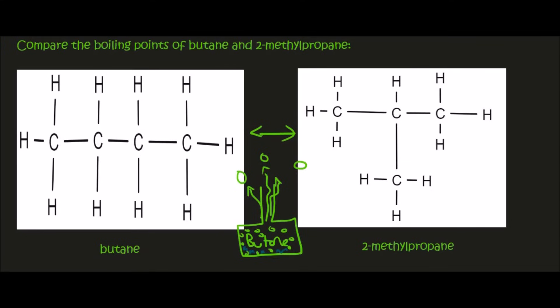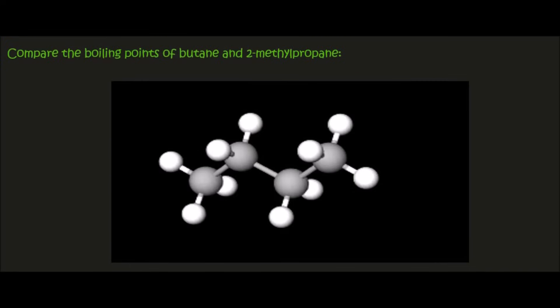You don't want to mix butane and 2-methylpropane together — that's not what the question is saying. Let's look at butane first. I want to quickly show you a three-dimensional view of butane. We can see the four carbons, and then we've got the hydrogens. We've got three hydrogens attached to the end carbon, two attached to the next carbon, two to that carbon, and then three to the carbon at the other end.